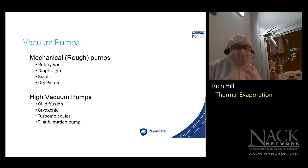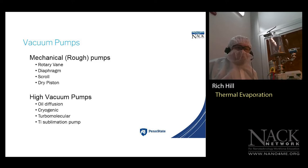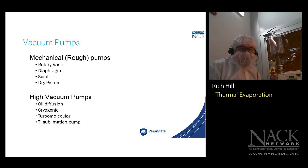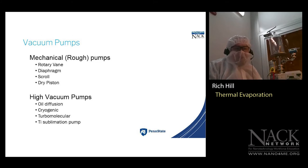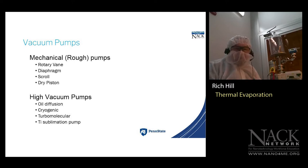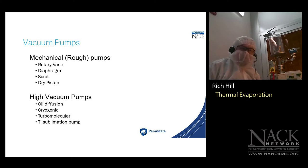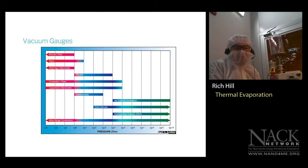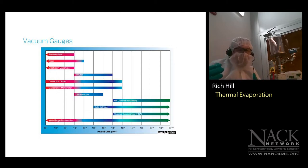For vacuum pumps: mechanical rough pumps include rotary vane, diaphragm, scroll, and dry piston pumps. For high vacuum, we have oil diffusion pumps, cryogenic pumps, turbomolecular pumps, and sublimation pumps. In our clean room we use turbo pumps to get to high vacuum range, and scroll, diaphragm, and rotary vane pumps for rough vacuum.